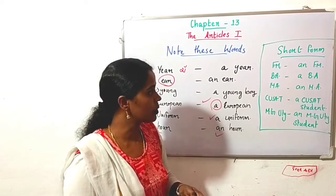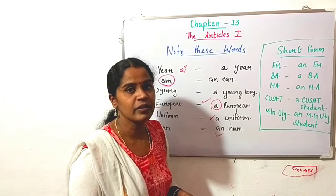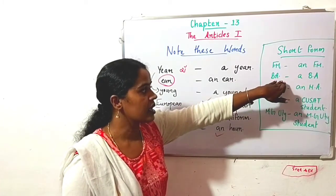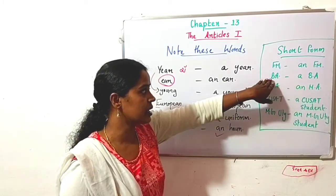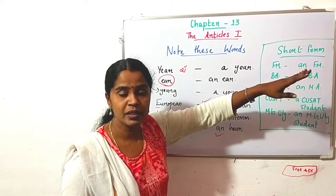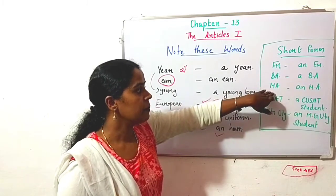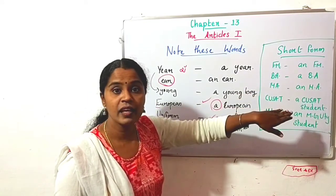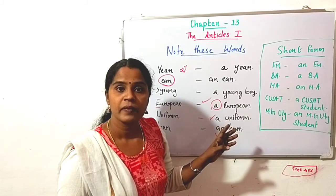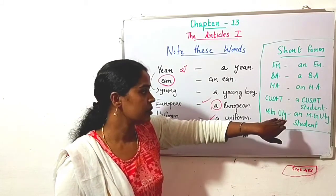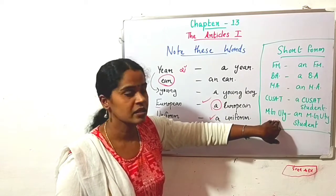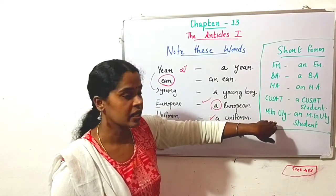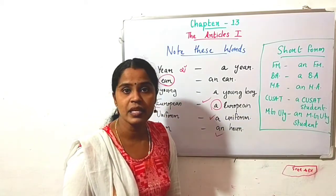While using some short forms: FM - 'an FM', because 'ef' sound begins. BA - 'a BA student', because it begins with 'B' sound, which is consonant. MA - 'an MA', there it is 'a' sound which begins. CUSAT - 'a CUSAT student', there the sound is consonant. MG University student or MG University campus. 'M' letter is 'em', but sound is 'a', 'em', so 'an MG University student'.